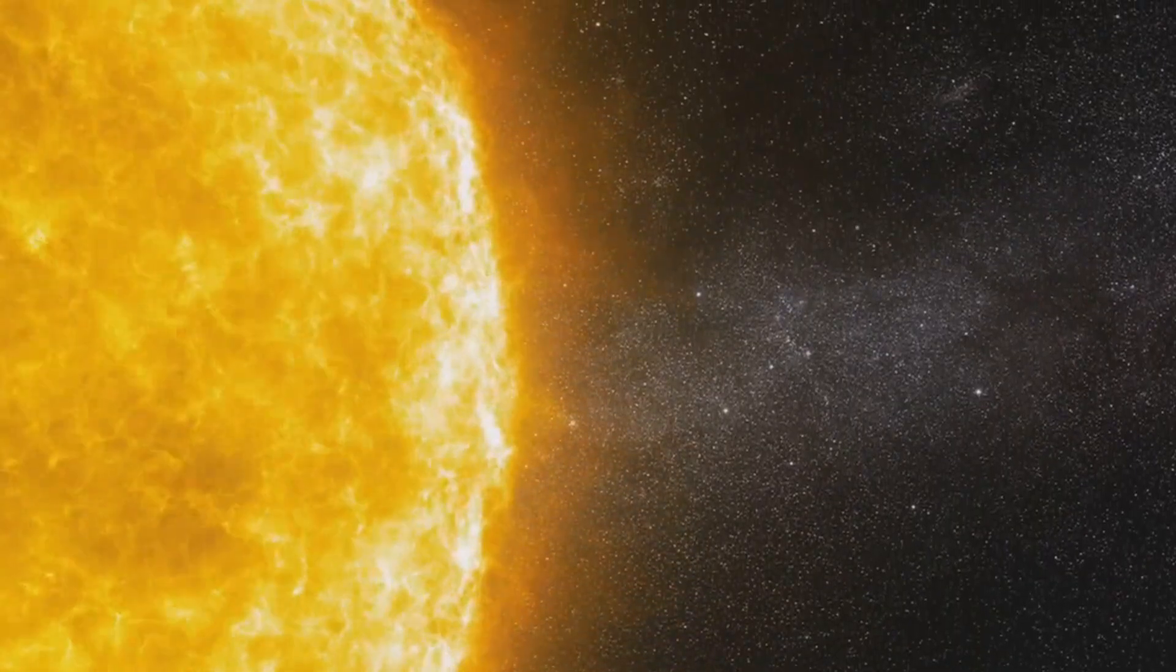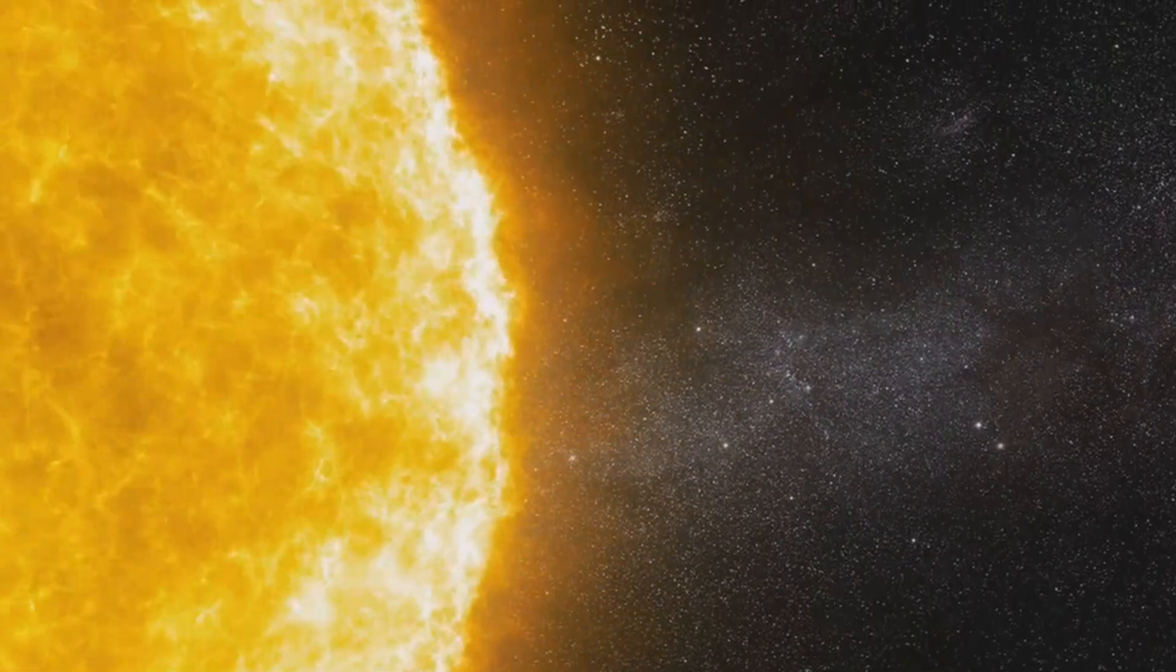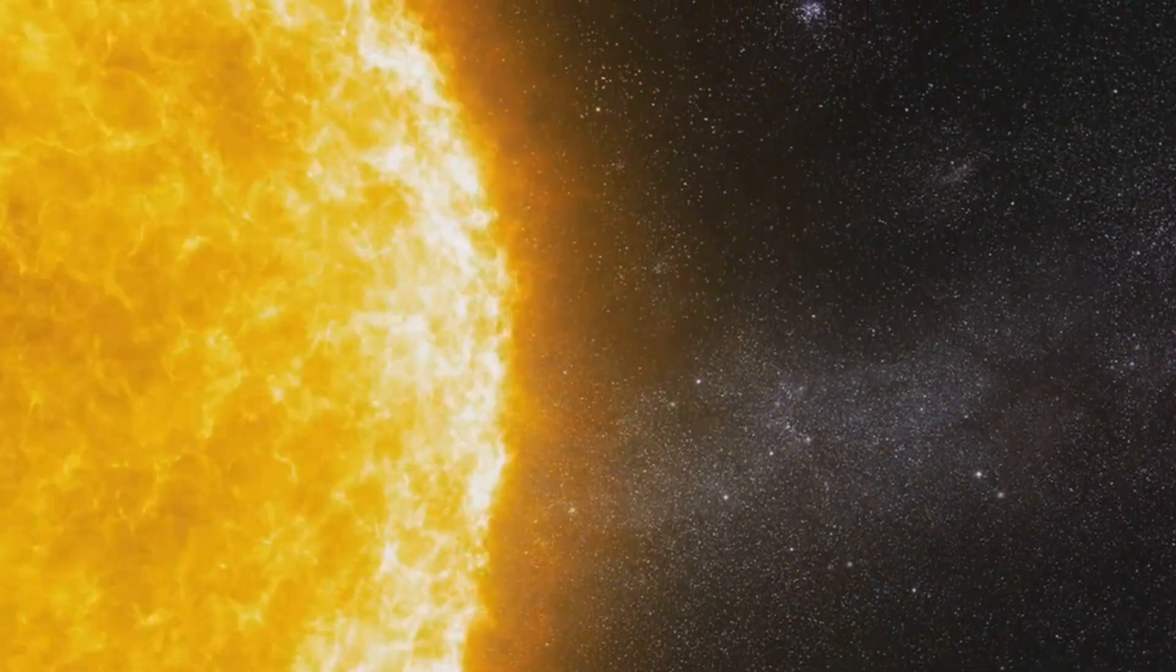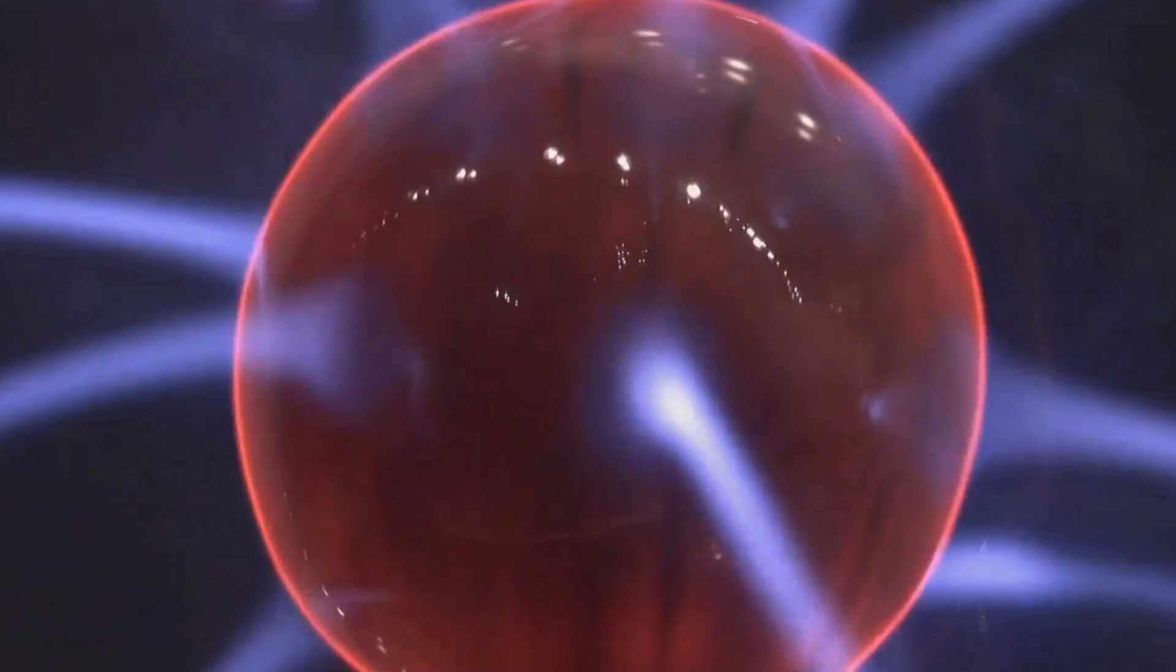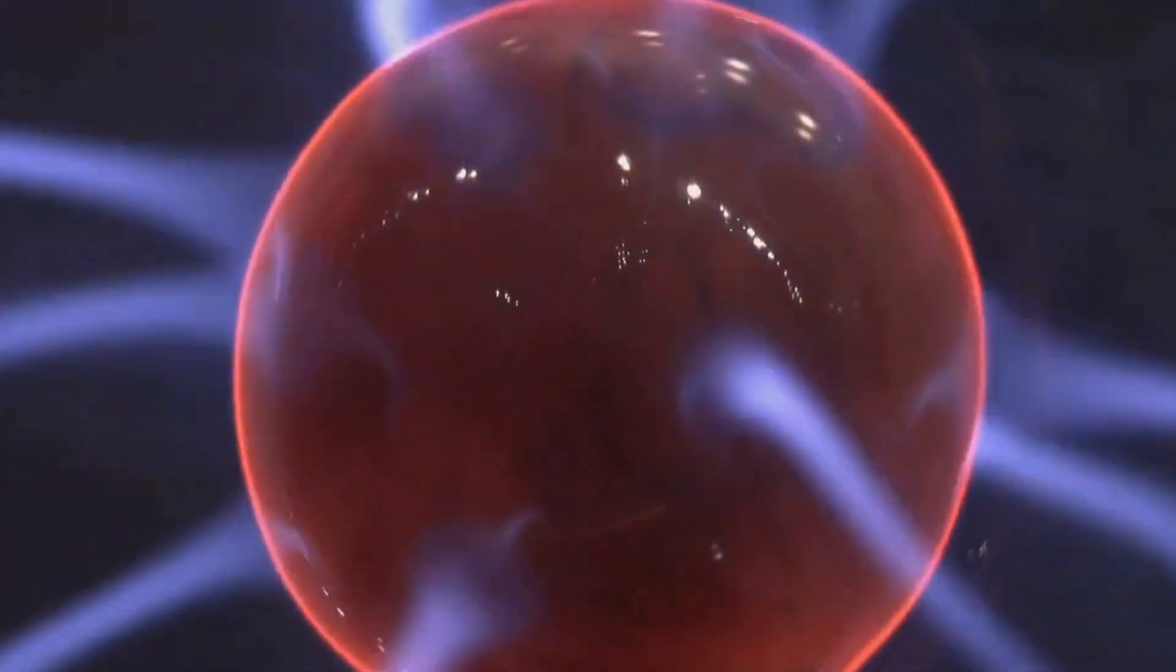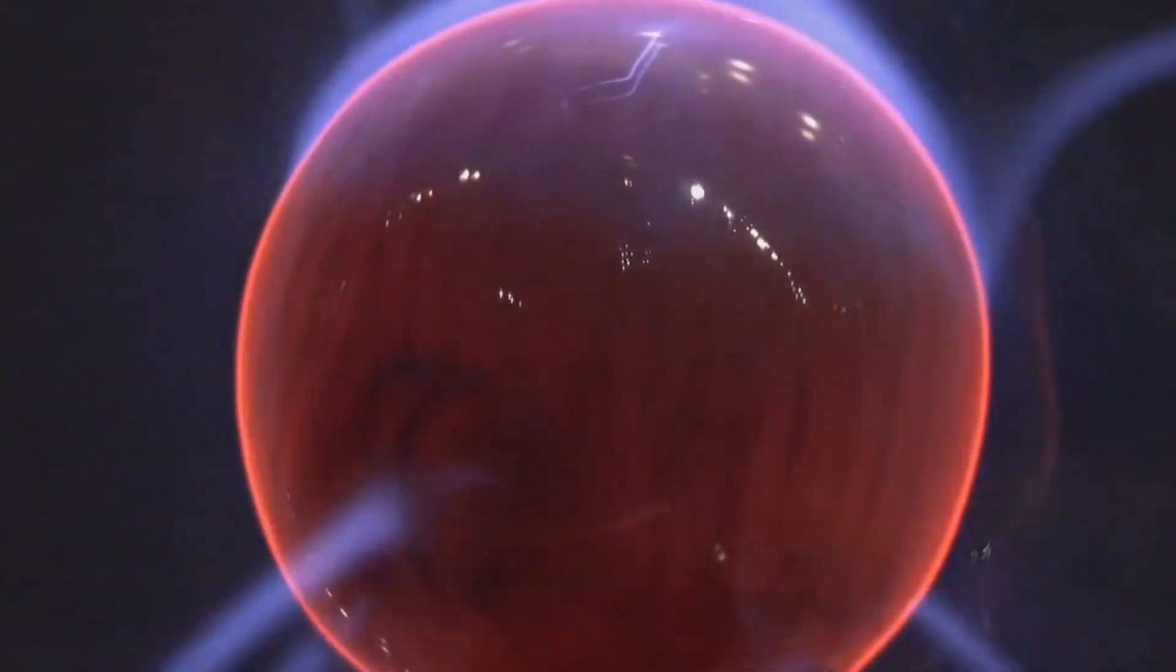You could compress the sun into about the size of Earth, similar to a white dwarf, about 6,400 kilometers in radius. Light grazing this object's limb would deflect by about 100 times as much, 0.05 degrees.